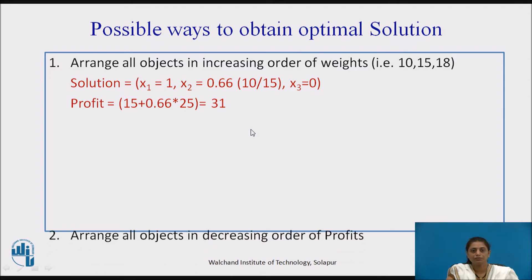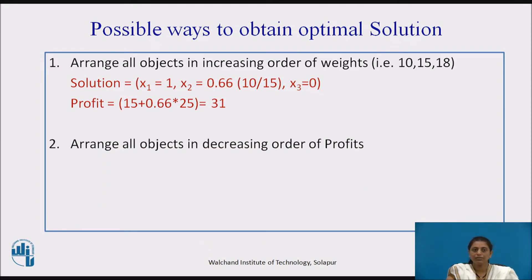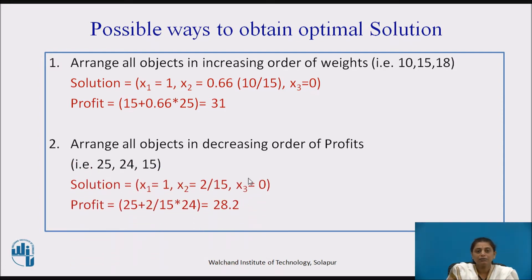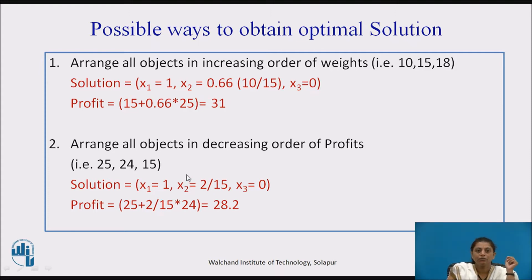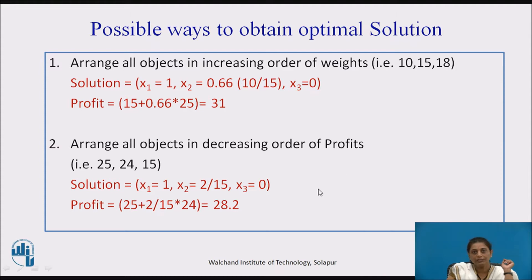Another approach is to arrange all objects in decreasing order of profit — inserting the object with maximum profit first. The maximum profit is 25, so we take the first object completely (weight 18). Remaining capacity is 20 minus 18, which is 2. We take only 2 parts of the second object, giving a profit of 28.2, which is again less than the maximum profit already obtained. So arranging by increasing weight or decreasing profit alone is not sufficient.